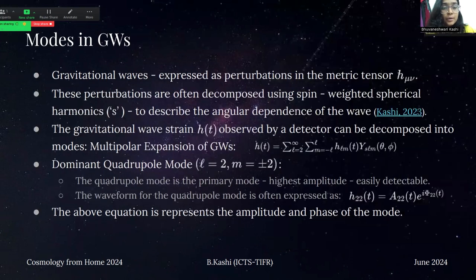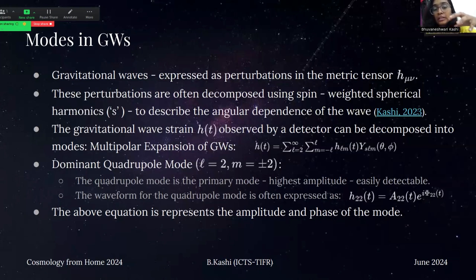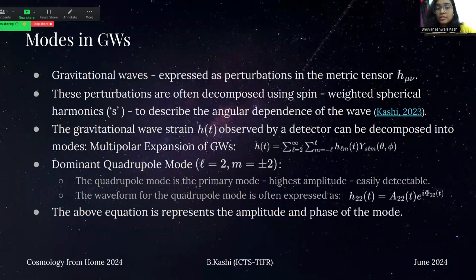Now let's understand what modes in gravitational waves are. Gravitational waves are mathematically described as perturbations in the metric tensor. Spin-weighted spherical harmonics, with a spin weight that accounts for the intrinsic angular momentum, help in the decomposition of these perturbations. The strain gravitational wave data absorbed by the detector is decomposed into different modes using multipolar expansion. It is modeled as H(t), which depends on the coefficients H_lm(t) and Y_s^lm, the spin-weighted spherical harmonics.